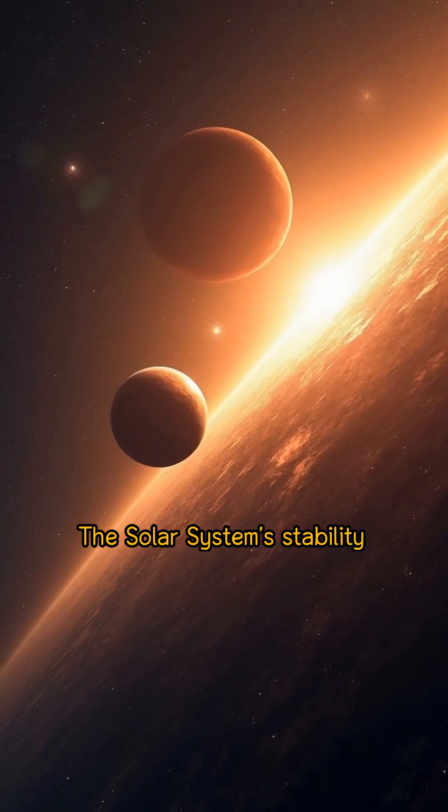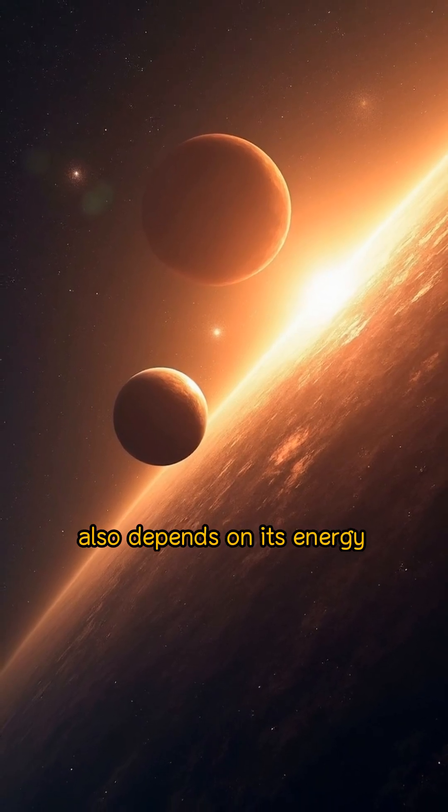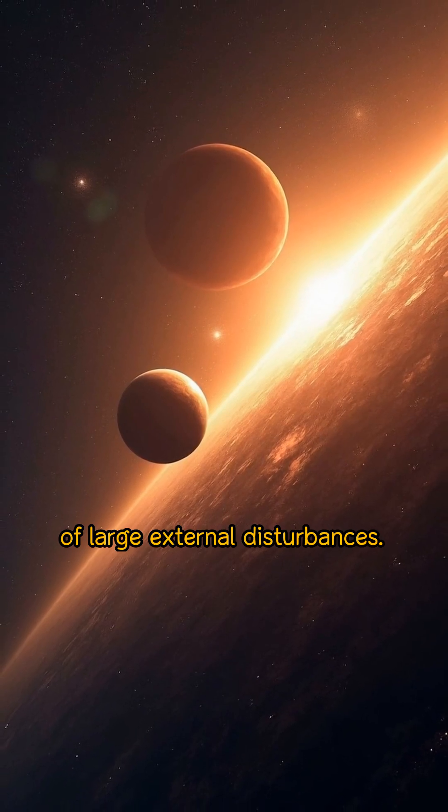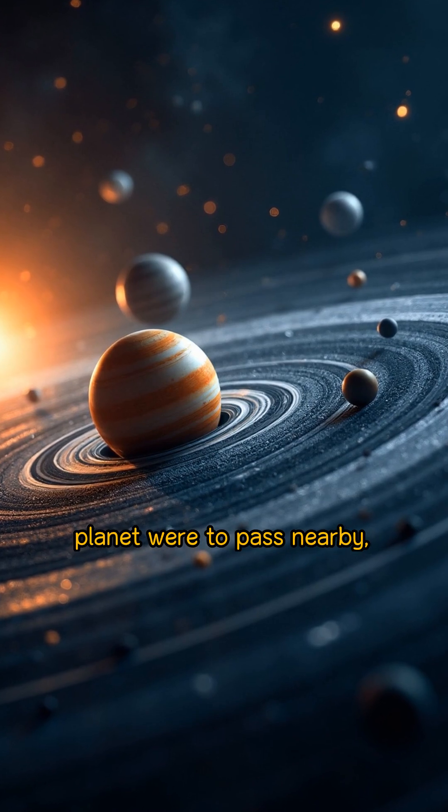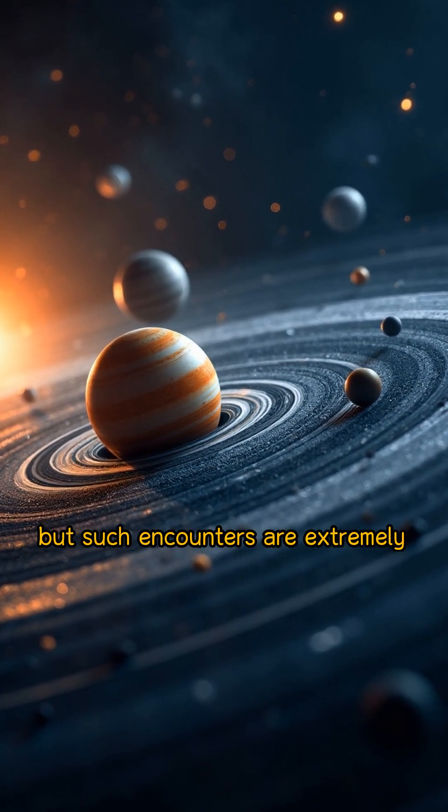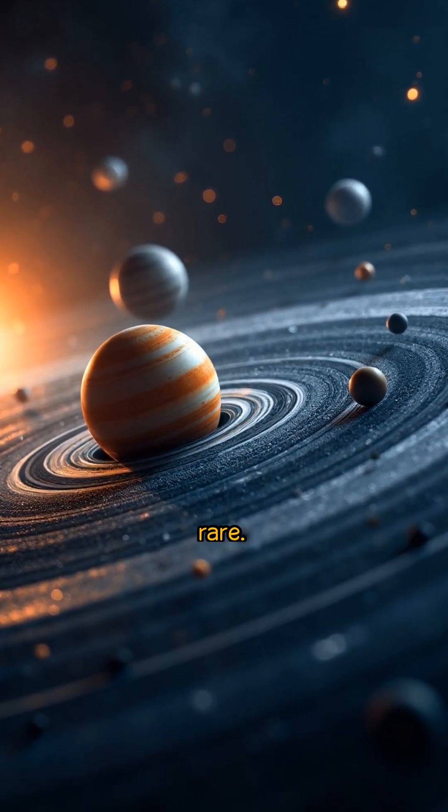The solar system's stability also depends on its energy distribution and the absence of large external disturbances. If a massive star or rogue planet were to pass nearby, it could disrupt orbits, but such encounters are extremely rare.